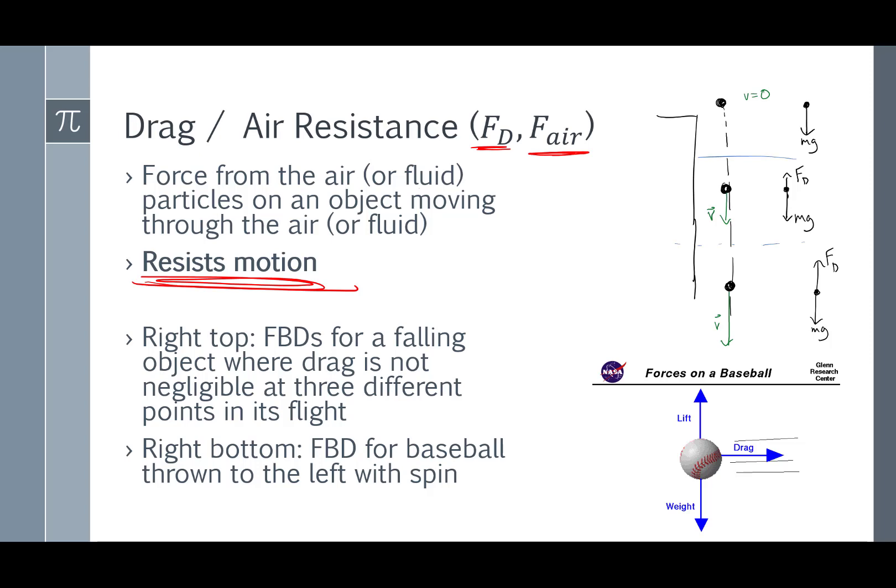So here's two sets of free body diagrams for objects that are moving where drag is not negligible. Here we have an object dropped off a cliff. Initially it's not moving, so there's no drag. And as it speeds up and accelerates down that cliff, the drag force increases and it pushes opposite the direction of motion. It gets bigger as the speed gets faster, too. Here's the forces on a baseball that's thrown. Gravity pulls down. The lift force pushes up, and that's due to the spin of the ball. And drag tries to slow the object down. It pushes against the direction of motion of the baseball.